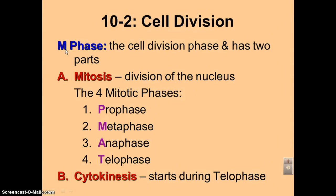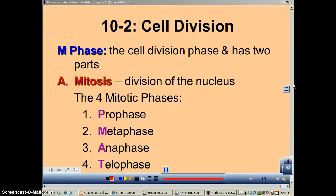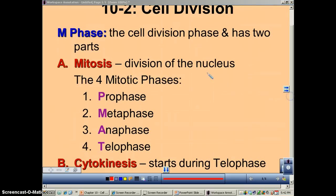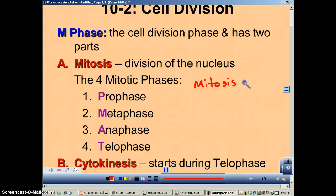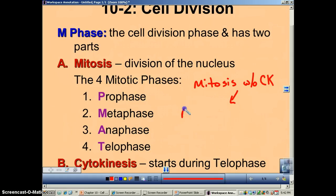The M phase — remember, M stands for mitotic — is divided up into two parts. There is mitosis, and then it's usually followed with cytokinesis. But if it's not, you're going to get a cell that has more than one nucleus. Mitosis without cytokinesis — CK for cytokinesis — that's going to result in what is called a multinucleated cell.